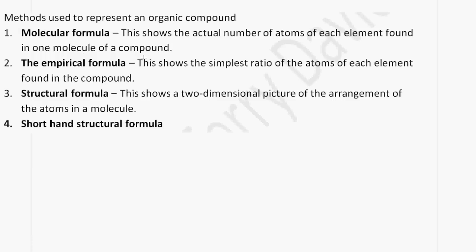There are various methods to represent an organic compound. It can be represented by a molecular formula, which shows the actual number of atoms of each element found in one molecule of the compound. We can also represent it using its empirical formula, which shows the simplest ratio of the atoms of each element found in a compound. We can also draw the structural formula, which shows a two-dimensional picture of the arrangement of the atoms in the molecule. And then we also have the shorthand structural formula.